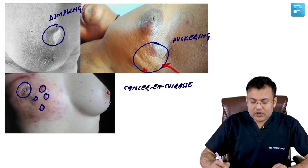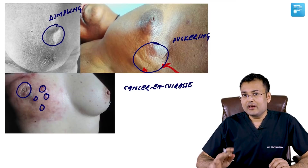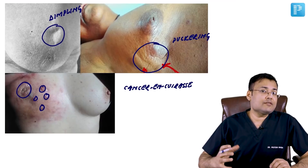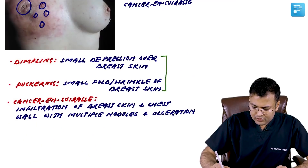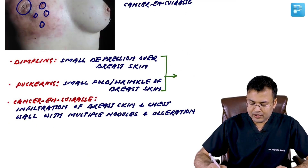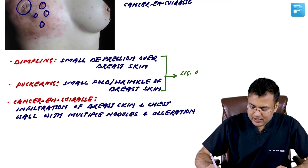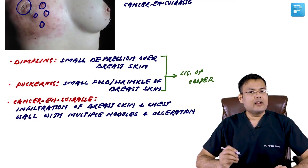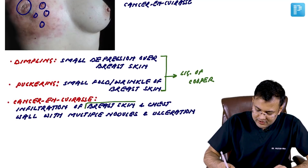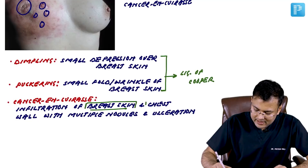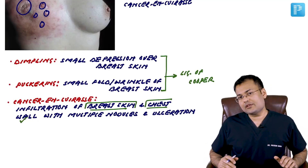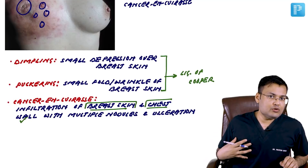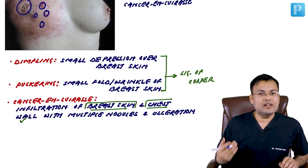The cause of dimpling and puckering is infiltration of the ligament of Cooper — this is a frequently asked question. In cancer en cuirasse, there is infiltration of breast skin and chest wall, resulting in multiple nodules and ulceration.